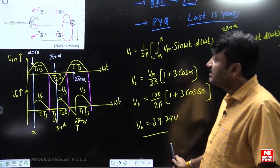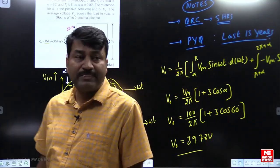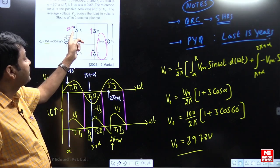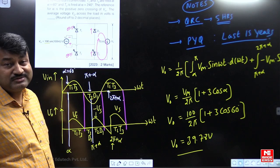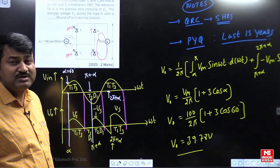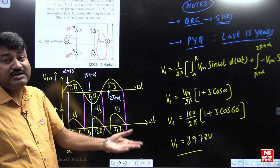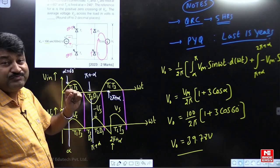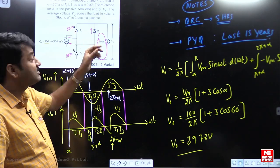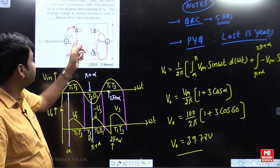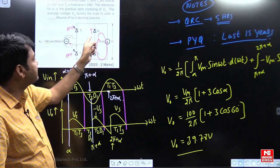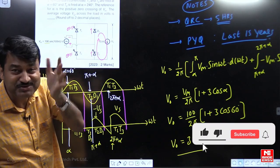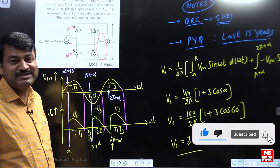My dear students, note that there may be small changes in future questions. This question used three thyristors and one diode — the examiner may change it to one thyristor and three diodes. Try to practice that variation as well. This was the question asked in 2023 with three thyristors and one diode — now do the same question with one thyristor and three diodes. All the best!